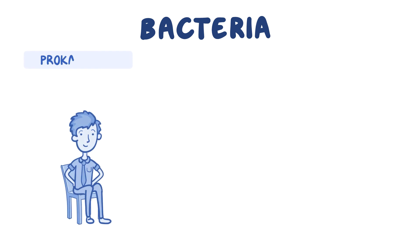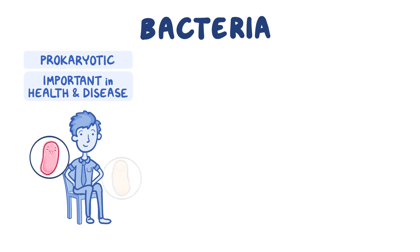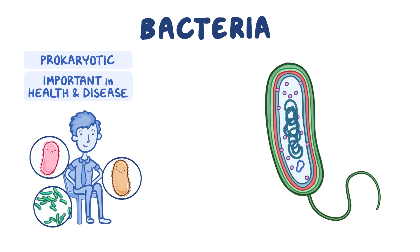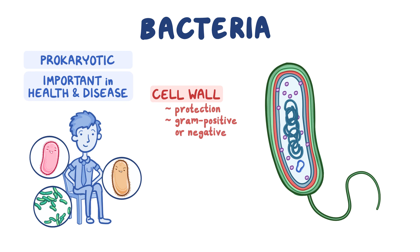As a quick recap: bacteria are prokaryotic cells that play an important role in human disease and health, and can be found almost anywhere in the environment. Bacterial cells are often surrounded by several layers collectively called the cell envelope. They have a cell wall which protects the bacteria, determines whether they are gram-positive or gram-negative, and helps maintain their shape. Some bacteria also have an extra layer on top of the cell wall called a capsule, which is a major virulence factor.